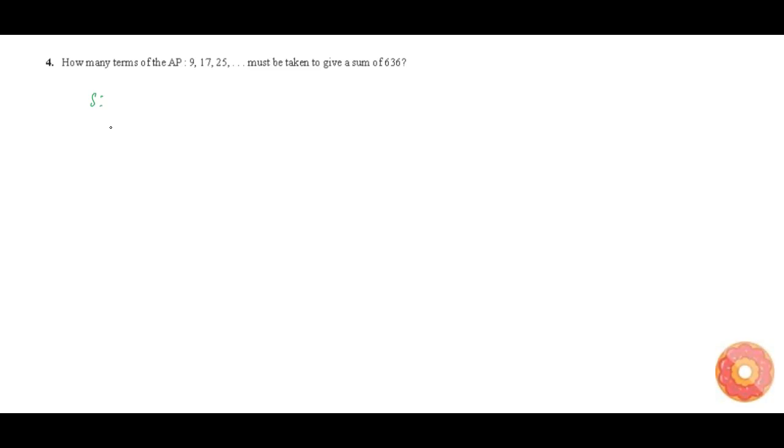Let us write the given AP sequence. The sequence is 9, 17, 25 and so on. It is given that this sequence is AP and the first term of the sequence is 9, second term of the sequence is 17, third term of the sequence is 25.